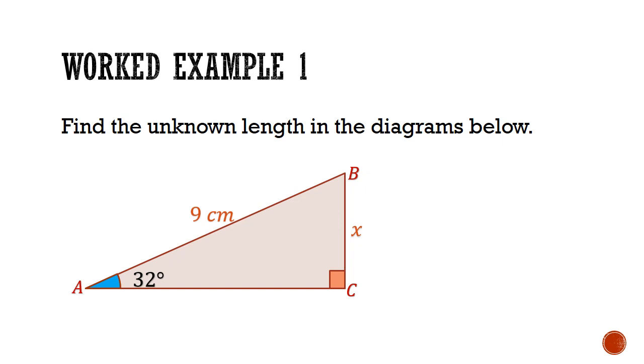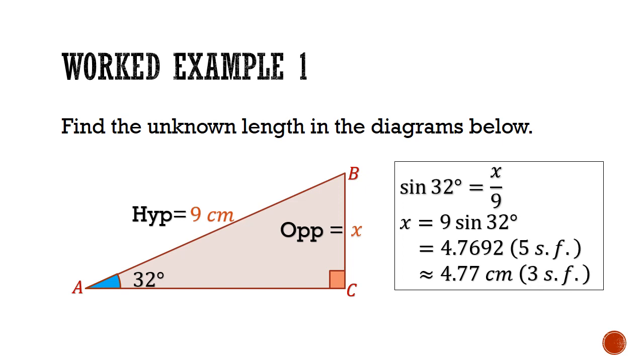Let's look at a work example. Suppose I have a triangle ABC with angle BAC equals to 32 degrees, and AB equals to 9cm. How can I find the length of BC? First, we need to label these sides. 9cm is the hypotenuse, and the unknown side x is the opposite. Which trig ratio involves opposite and hypotenuse? That has to be sin. So sin 32°, the reference angle, equals to x over 9. We can solve this by cross multiplication to get x equals to 4.77cm rounded to 3 sig figs.